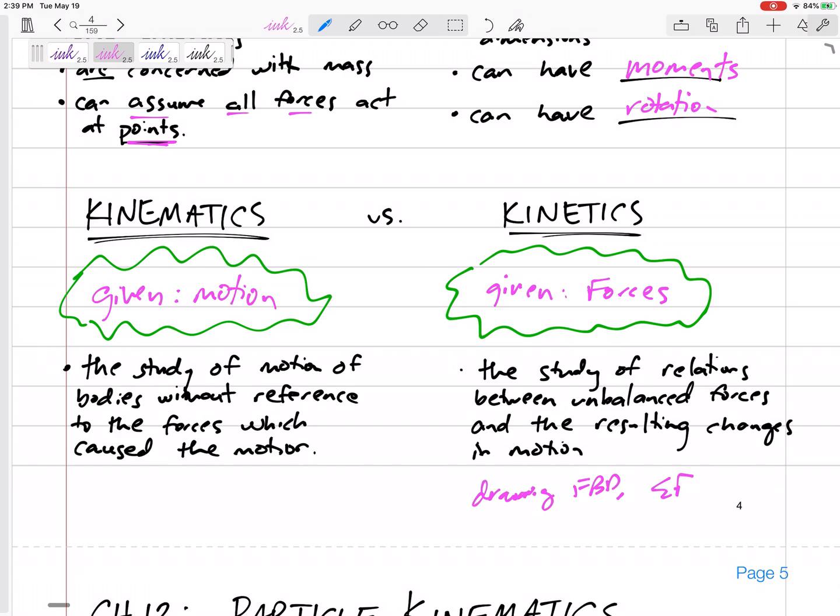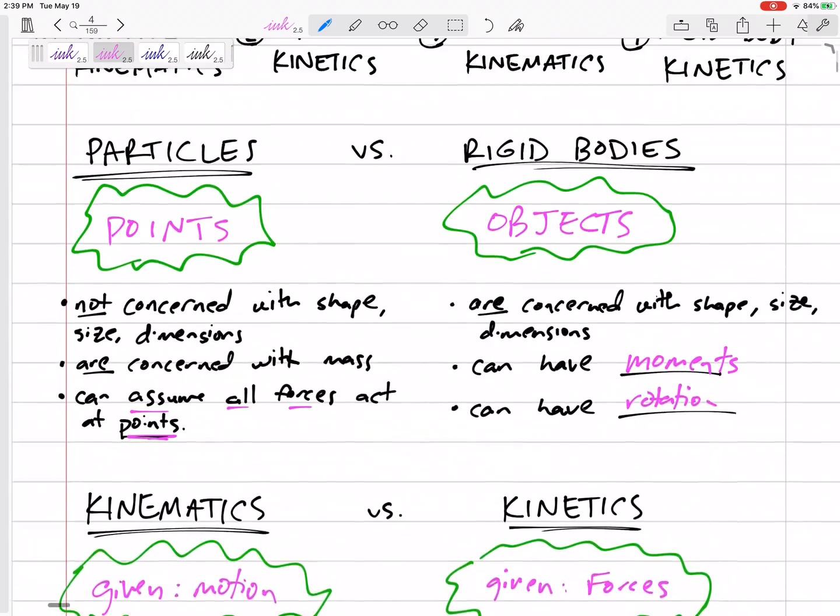We're summing forces equals mass times acceleration, then take that acceleration and do everything we'd been doing. Whereas kinematics, we're told the acceleration or velocity and find the rest. You see how progressively it gets harder.